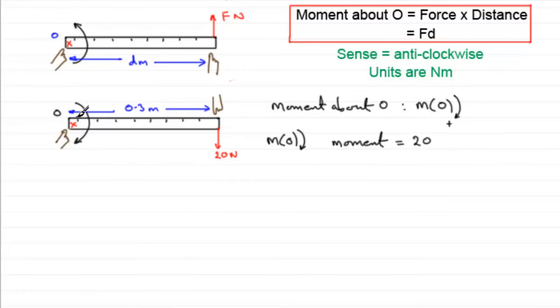Then that moment will clearly be equal to the force, which is 20 newtons, multiplied by the distance to the pivot here, the point that it turns around. So it's going to be 20 multiplied by the distance 0.3. And so that comes out to equal 6. And as we discussed earlier, the units would be newton meters.